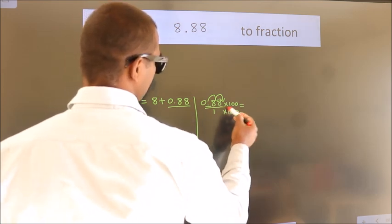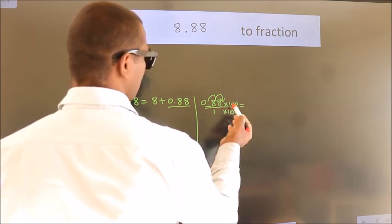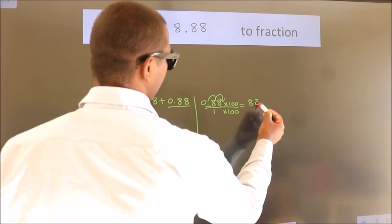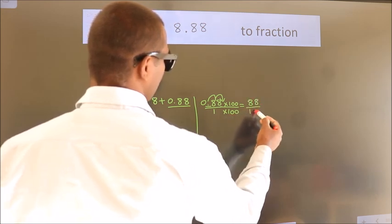Next, 0.88 into 100 is 88. 1 into 100 is 100.